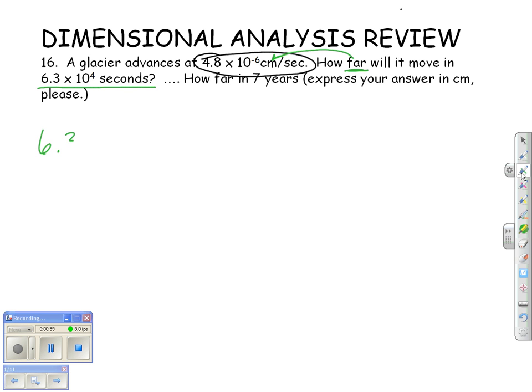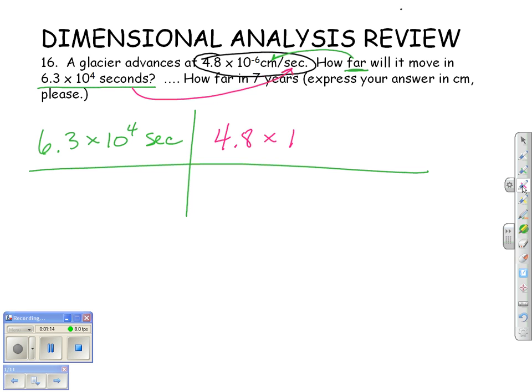We're going to start with the 6.3 times 10 to the 4th seconds. Now, because we have seconds on the bottom of this ratio, we can use that ratio and say, it'll move 4.8 times 10 to the negative 6 centimeters in a second. Well, if you have seconds on top and bottom, you can cancel them out and you're now in your centimeter units for how far it's going to travel. So all you have to do is the math and your calculator and you should find out that it will travel 0.3 centimeters.